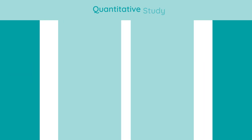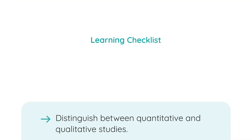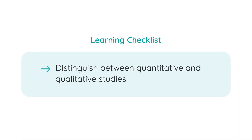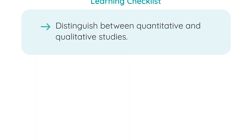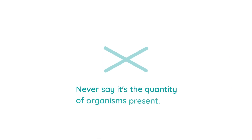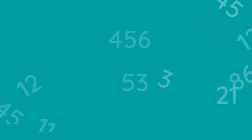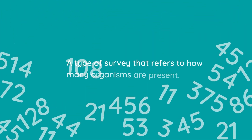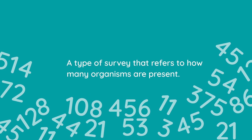So what do you need to be able to do? You simply need to be able to distinguish between quantitative and qualitative studies. For a quantitative study, never ever say that it's the quantity of organisms present. Always write down that it is a type of survey that refers to how many organisms are present.